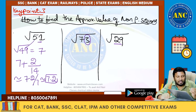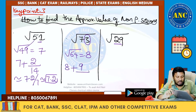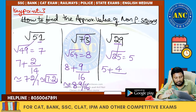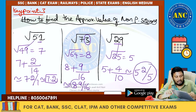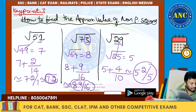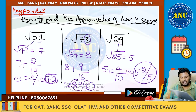Square root of 73: root 64 = 8, so 8 + (73 − 64) / (2×8) = 8 + 9/16. Square root of 29: root 25 = 5, so 5 + (29 − 25) / (2×5) = 5 + 4/10 = 5.2/5. Always a non-perfect square will give you an approximate value. We did a perfect square and a non-perfect square logic.